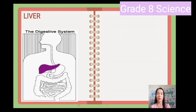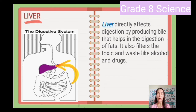The first accessory organ is the liver. The liver directly affects digestion by producing bile that helps in the digestion of fats. It also filters toxic waste like alcohol and drugs.